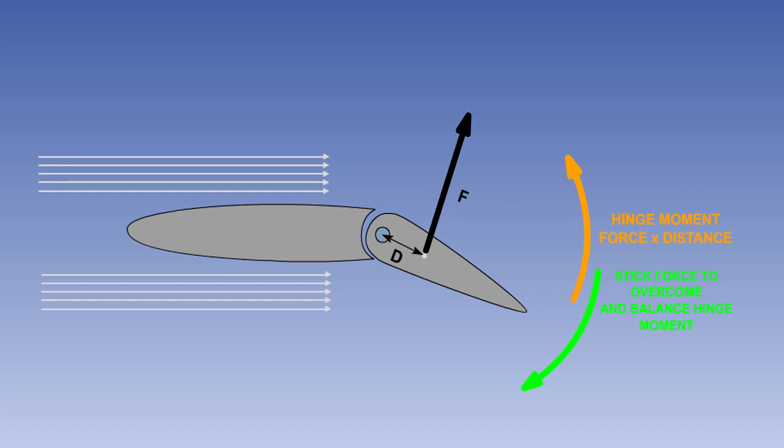To move the flying control surface to the required angular displacement and maintain it in that position, the pilot has to overcome and then balance the hinge moment by applying a force to the cockpit control. The cockpit control load or stick force will therefore depend on the size of the hinge moment. Up to a point, this is a good thing, as it produces feel in the controls.